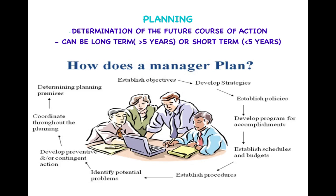After establishing the schedules and budgets, we establish our procedures. After establishing procedures, we identify potential problems — what are the problems that could occur during the course of achieving our objectives. Once we identify the potential problems, we develop a preventive or contingent action plan to overcome them. After that, we coordinate throughout our planning process and finally determine the planning premises under which the planning will be done. This is the basic planning process.